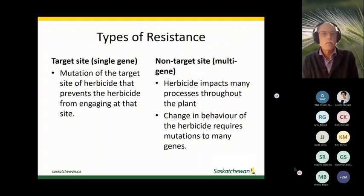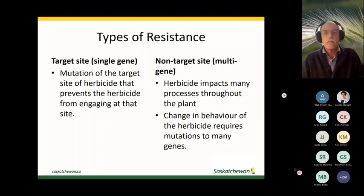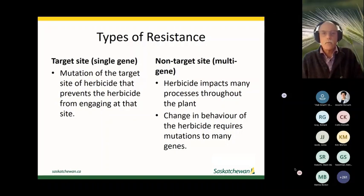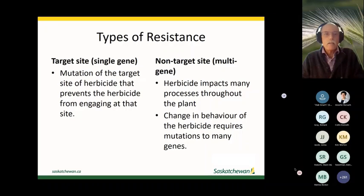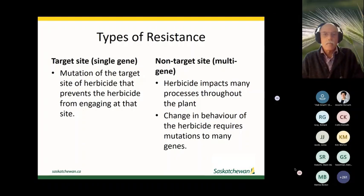The most common type found in Saskatchewan is target-site or single-gene mutation — essentially a mutation of a gene that is either the target site itself or associated with it, preventing the herbicide from associating with that target site. In non-target-site resistance, these are generally multigenic, requiring several mutations to line up throughout the plant.